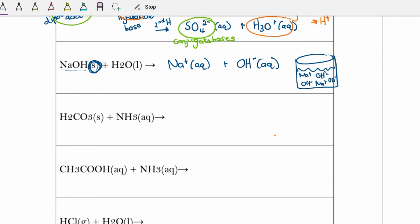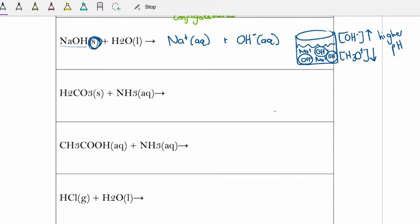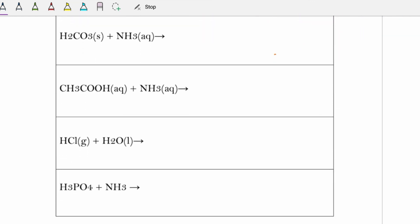The more moles of hydroxide ions you have in a given volume of solution, the higher the concentration of hydroxide ions, and the lower the concentration of hydronium ions — making the solution more basic than acidic. The more basic the solution, the higher the pH will be.